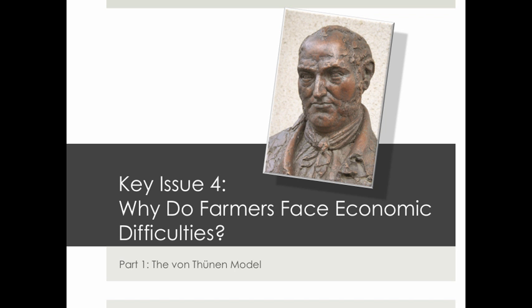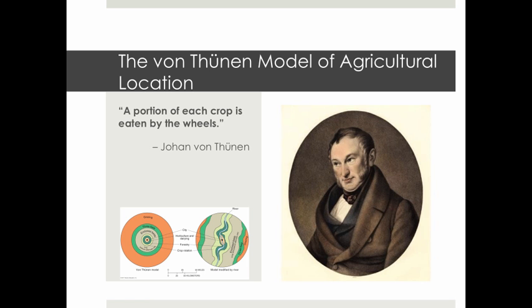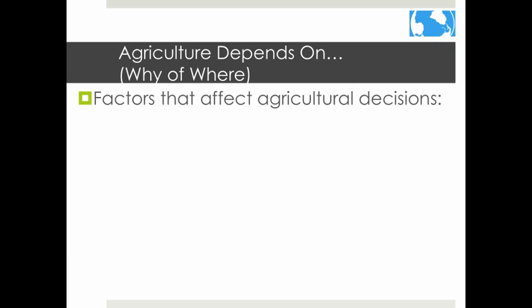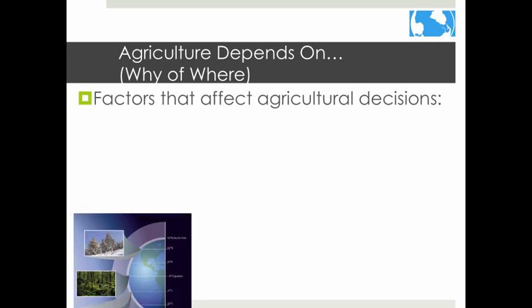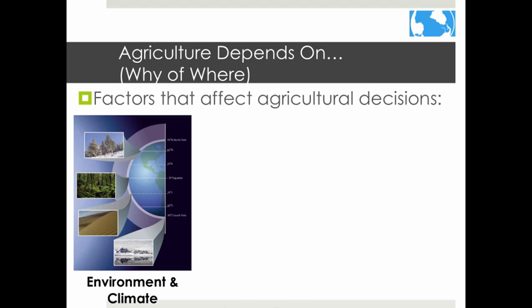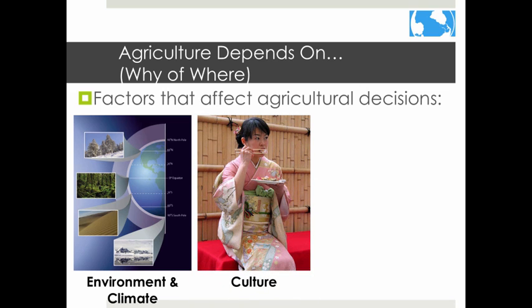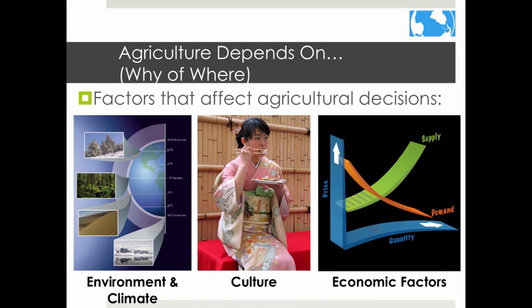A key issue is why farmers face economic difficulties. Agriculture depends on factors including climate, physical environment, culture, and economic markets. The Von Thünen model focuses on explaining the economic factors that influence the location of agriculture.